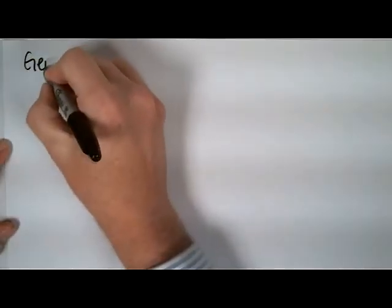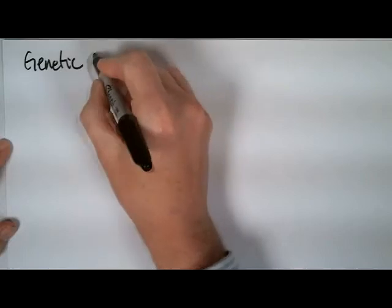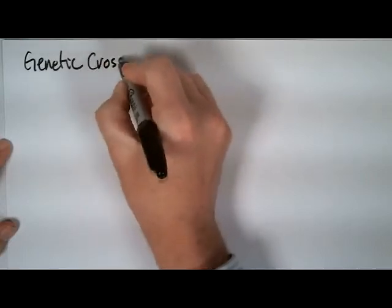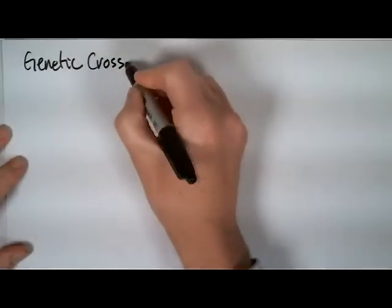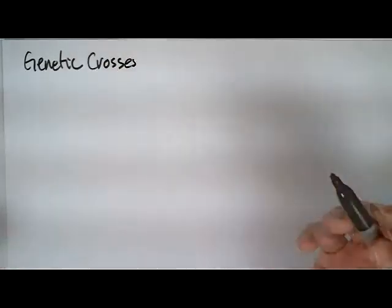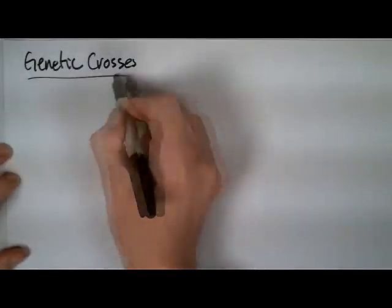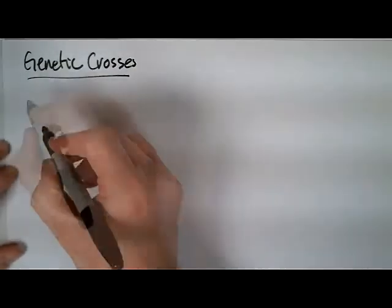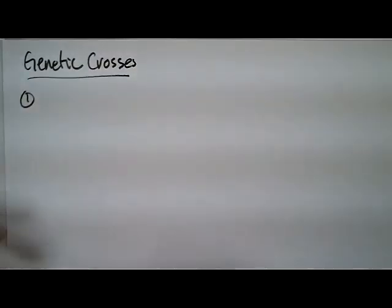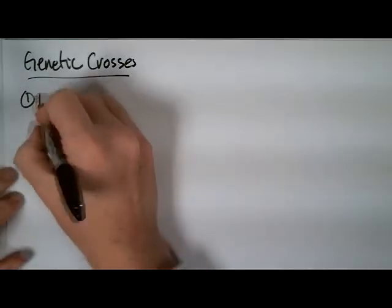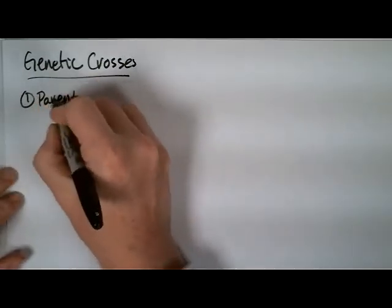First of all, genetic crosses. How do you run a genetic cross? There are some steps that you need to do. The first step, when you're given this word problem or story problem, is to determine the parent's genotype.